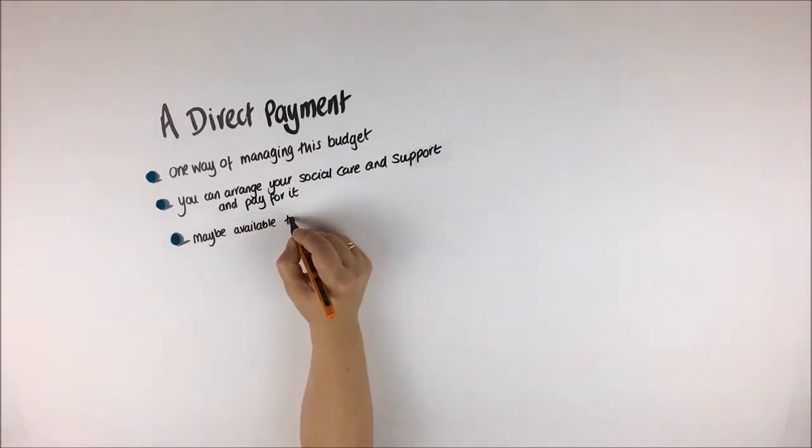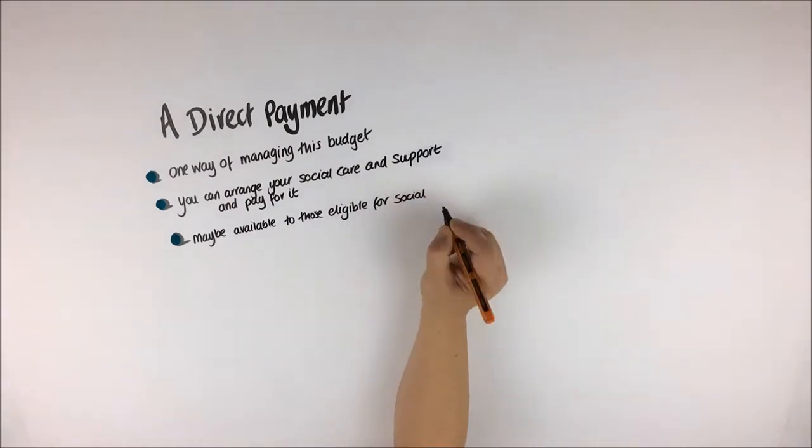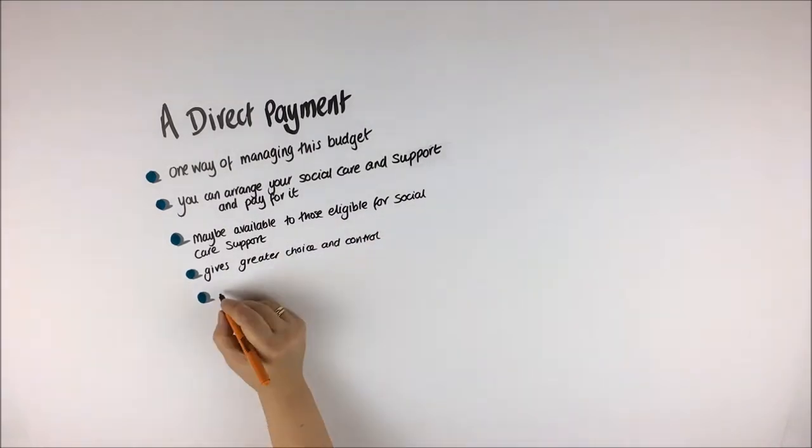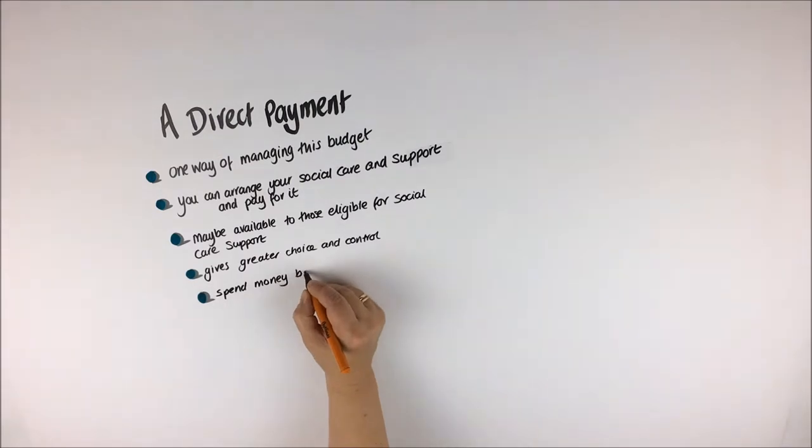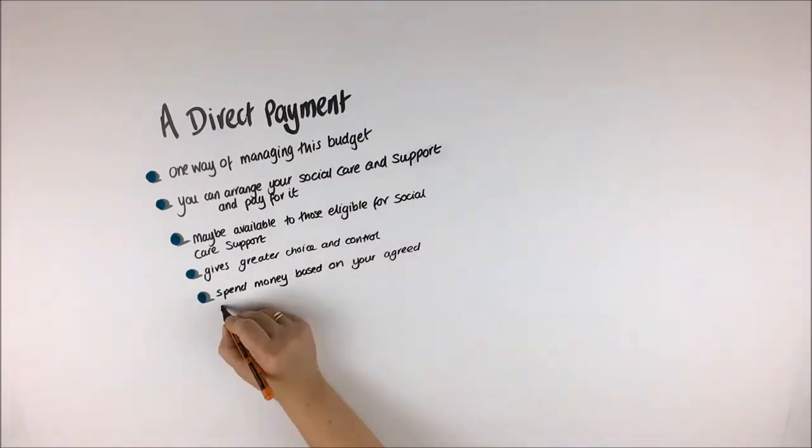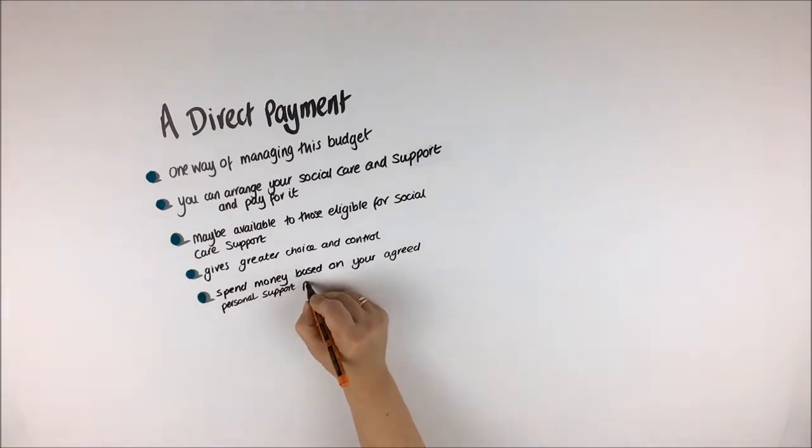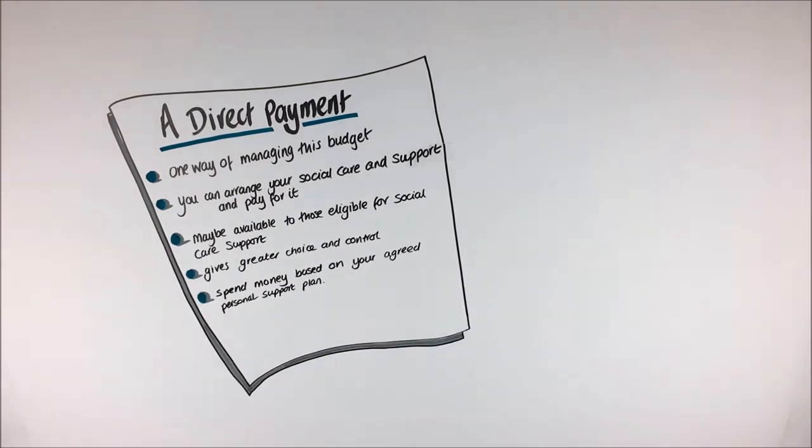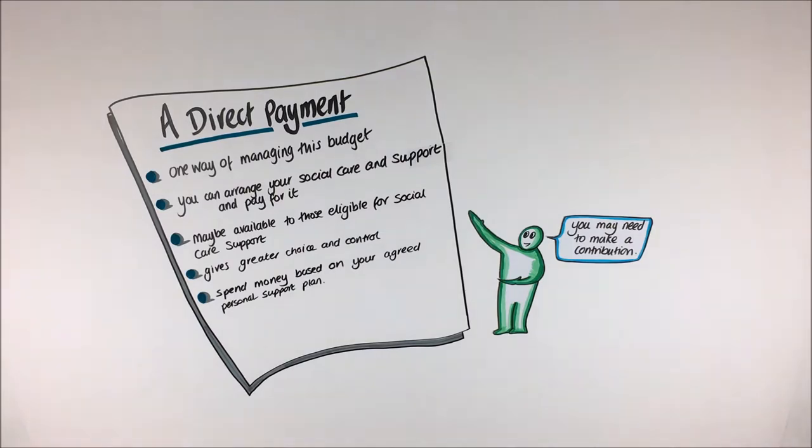Personal budgets have been used for a number of years and may be available to individuals who are eligible for social care support. A personal budget gives you greater choice and control. What the money can be spent on is based on what is agreed in your personalized support plan. You may also have to make a contribution to the costs of your care and support.